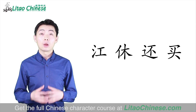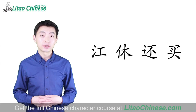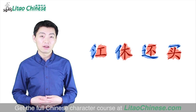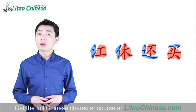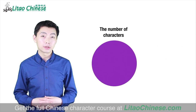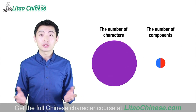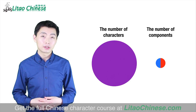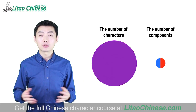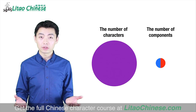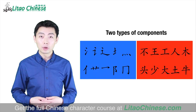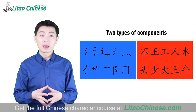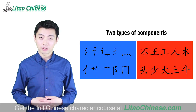Basically, all complex Chinese characters can be broken down into these two kinds of components. There are thousands of characters, but the commonly used components are much fewer than that. So the most efficient way of learning Chinese characters is to learn these two kinds of components first, then learn how to combine them into all the other characters.